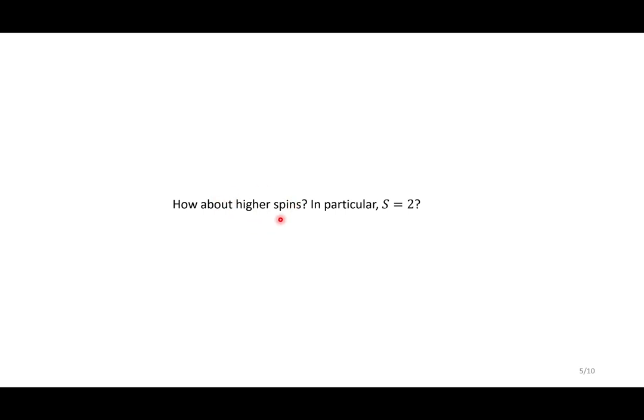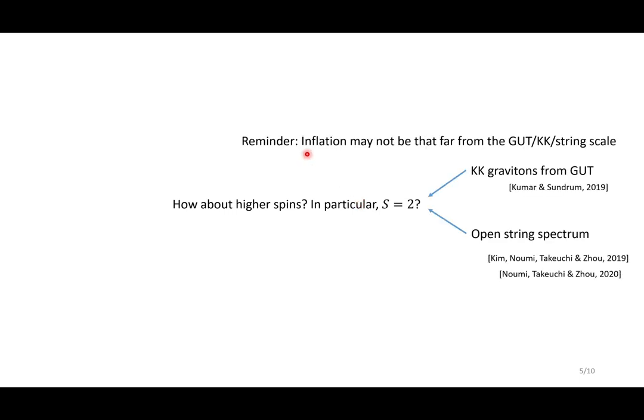However, what happens for the higher spins? In particular, the case of spin equals 2. And let us be reminded that inflation may not be very far away from the GUT or the Kaluza-Klein string scale. So this means there is a natural motivation for studying these massive spin-2 particles, which could potentially come from KK gravitons from the GUT or the most commonly known open string spectrum.